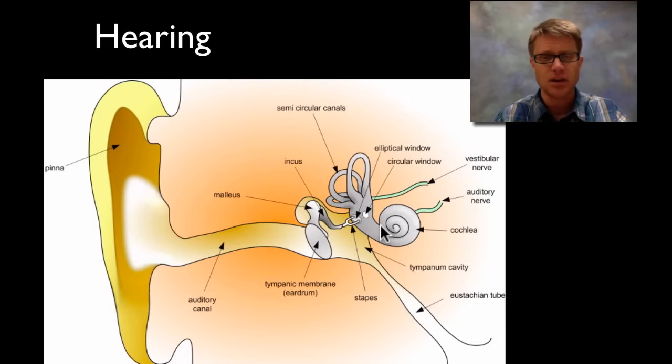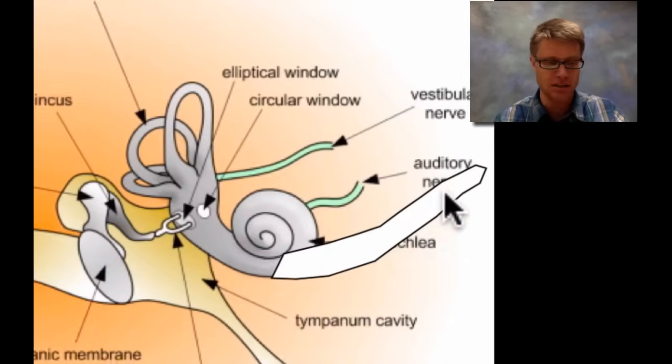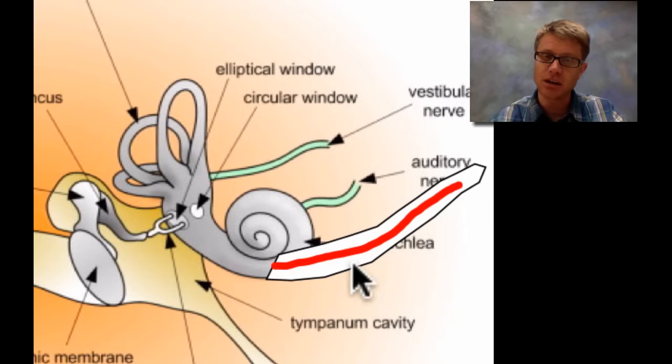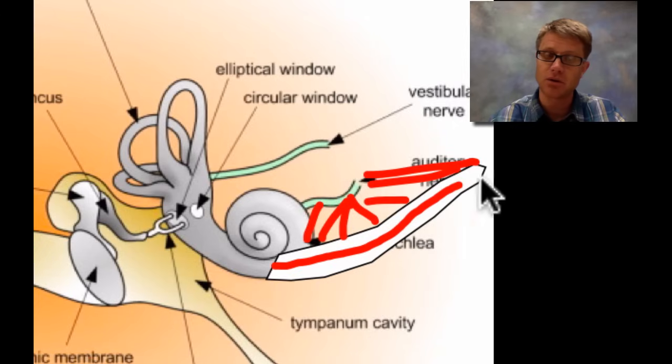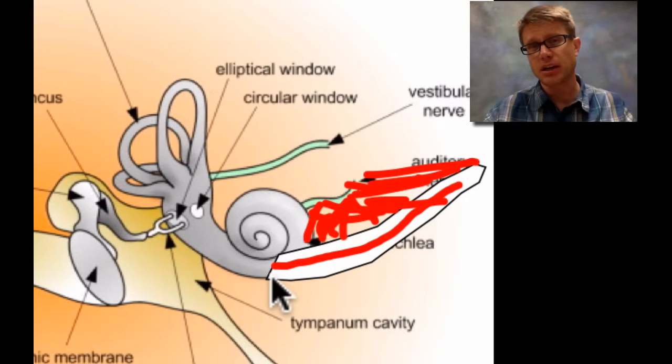But how do we sense sound? Well this is an awful drawing here. But basically if I were to take the cochlea and unwind it, what you get is this long tube. Basically the fluid in here is going to vibrate. There are going to be nerves that go out of here to the auditory nerve. So again I've unwound the cochlea. Basically what happens is you're going to vibrate the fluid inside the cochlea. And depending on the pitch you're going to vibrate it in a different area.